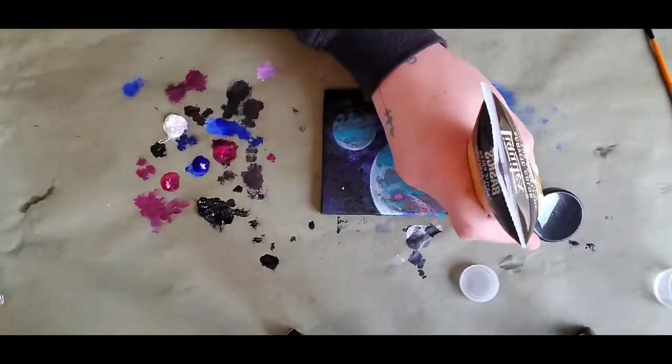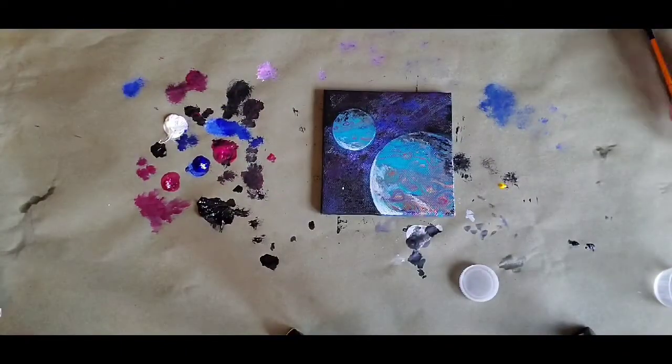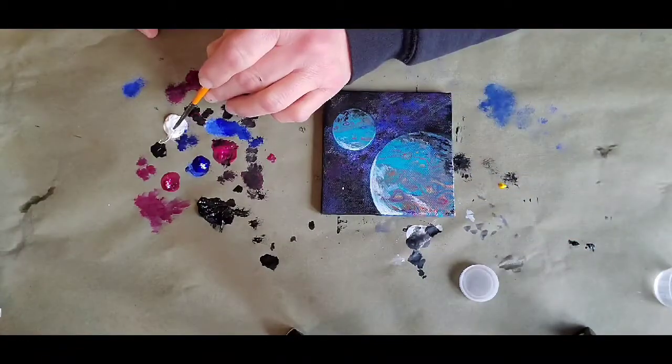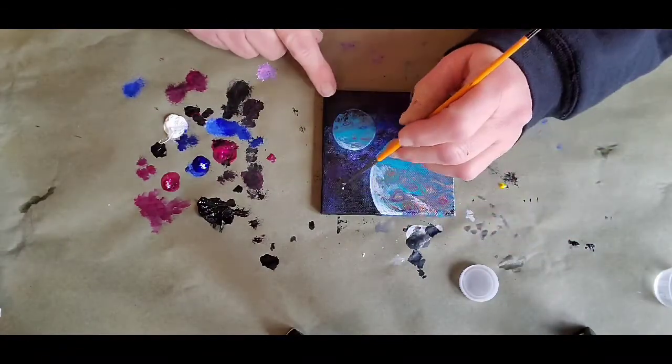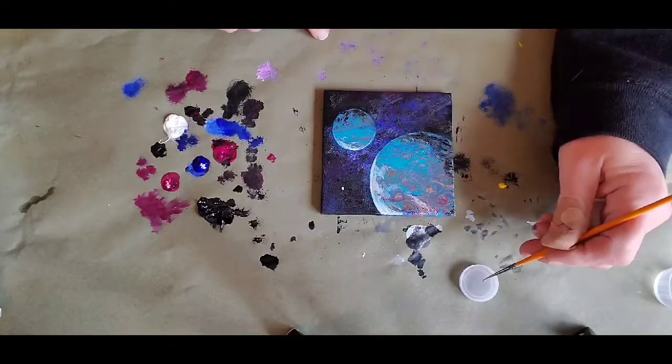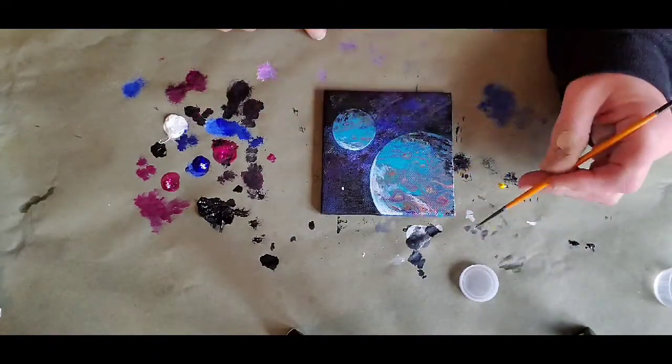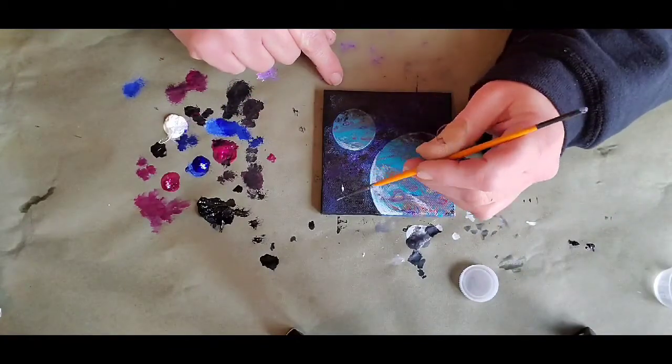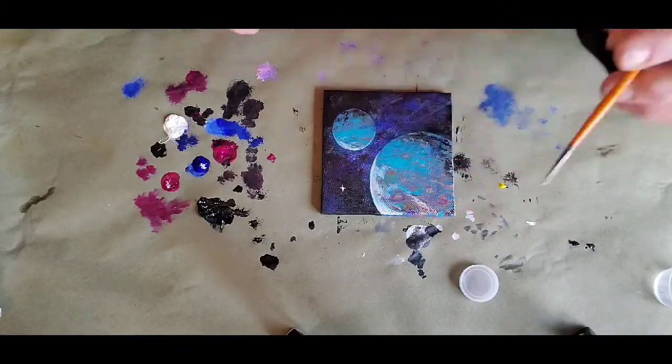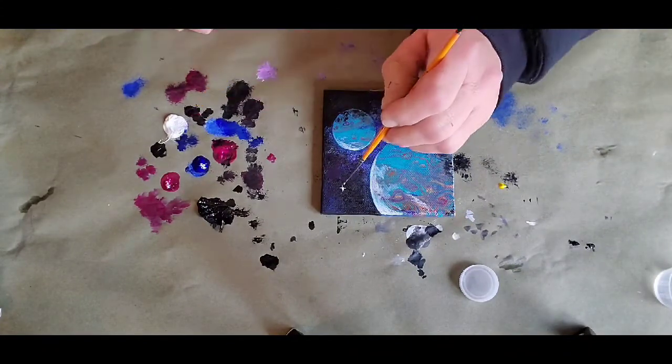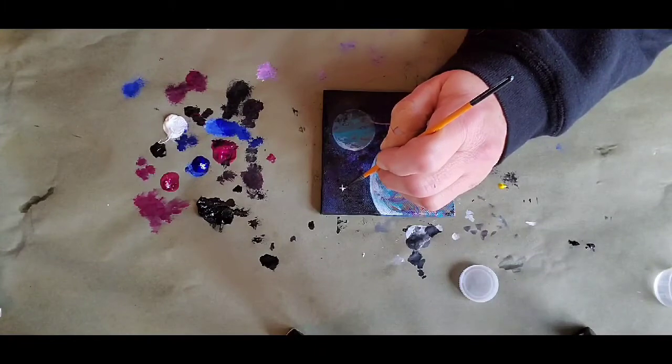Now I'm adding a cadmium yellow medium hue from Basics, Liquitex Basics. It's a transparent color, so you don't really need that much. I'm making the sun bigger because it's the closest star in the system, so I'm just going to put it a little bit larger than the rest.